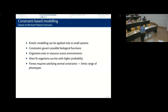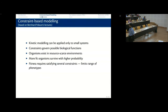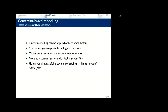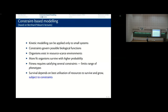Organisms exist in resource-scarce environments and fitter organisms survive with higher probability. Fitness itself requires satisfying several constraints which limits the range of phenotypes. For example, if E. coli is not able to utilize glucose properly it's going to die, and if it doesn't have a lactose-utilizing enzyme it cannot grow on milk. There are clear constraints which limit the range of possible phenotypes — survival depends on best utilization of resources, always subject to constraints.